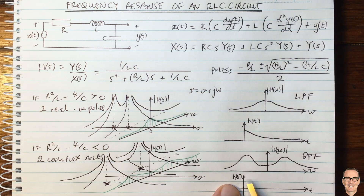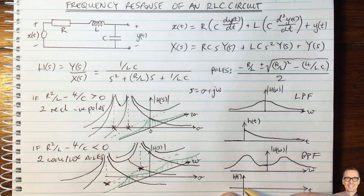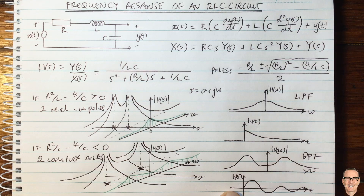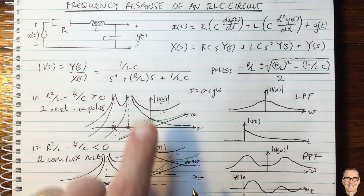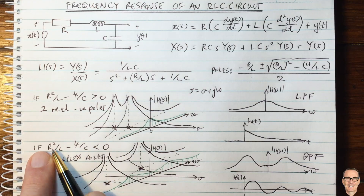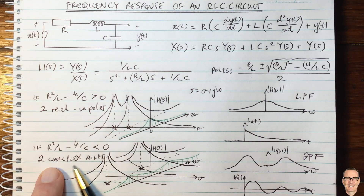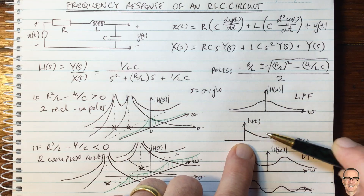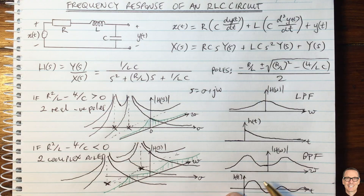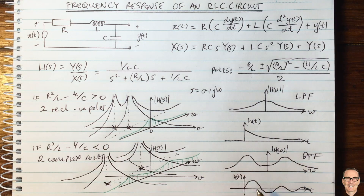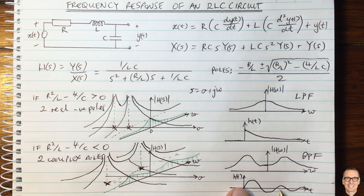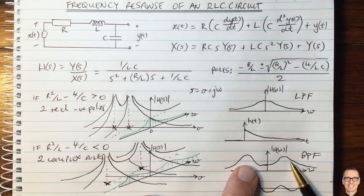The impulse response of this band pass filter is a sinusoid multiplied by a negative exponential. When the resistor, inductor, and capacitor values produce complex poles, the impulse response oscillates and then dies down. By contrast, for the real-pole low pass case the impulse response decays monotonically. Complex poles cause oscillation in the time domain and a band pass frequency response.